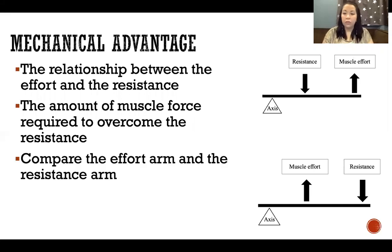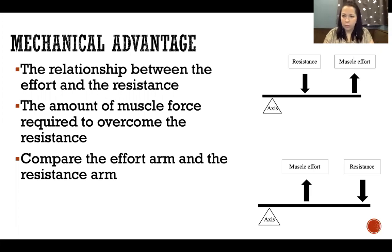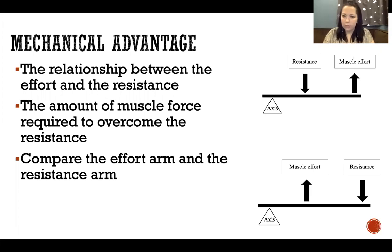We do that by comparing the effort arm and the resistance arm. The effort arm is the distance between the axis of rotation or the fulcrum and the application of the muscle effort, and the resistance arm is the distance between the axis and the point of application of the resistance.